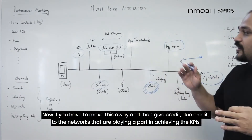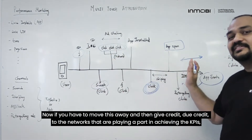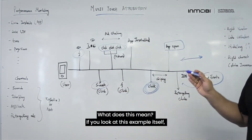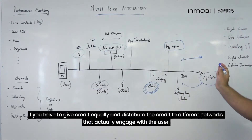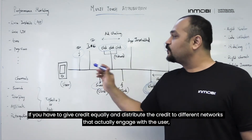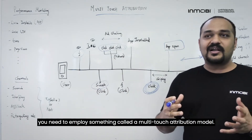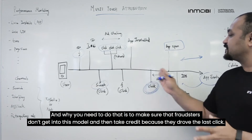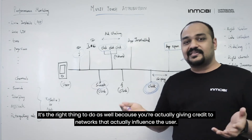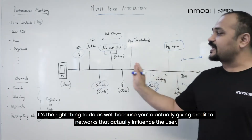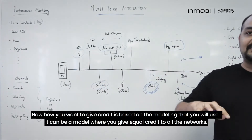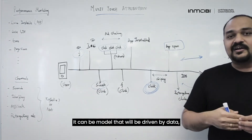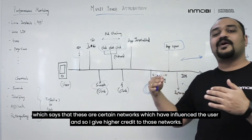To give due credit to the networks that are playing a part in achieving KPIs, the marketer has to work with vendors to do multi-touch attribution. Looking at this example, there are at least 10 different touch points before any KPI happens. To distribute credit equally to different networks that actually engage with the user, you need a multi-touch attribution model. This ensures fraudsters don't take credit just for driving the last click. It's the right thing to do because you're giving credit to networks that actually influence the user. Credit can be distributed equally, or via a data-driven model that gives higher credit to networks which most influenced the user.